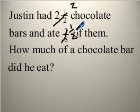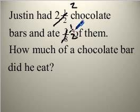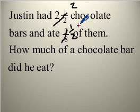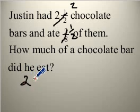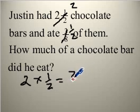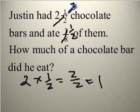So he had two chocolate bars and ate a half of them — how much did he eat? How would you get the answer using these numbers? What mathematical operation using two and one-half gives you the answer, which is obviously one? You eat one chocolate bar. So can you see whether you need multiplication or division? We take two and multiply it by one-half to get our answer of one.